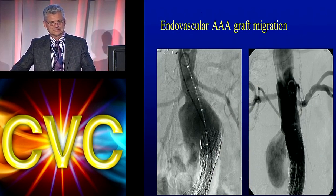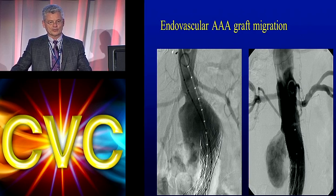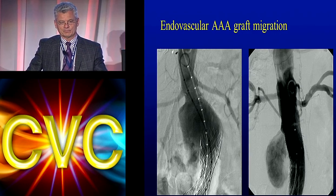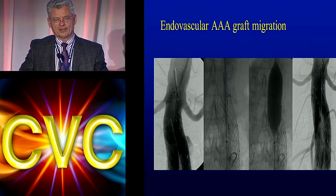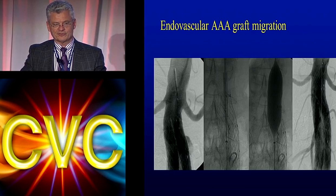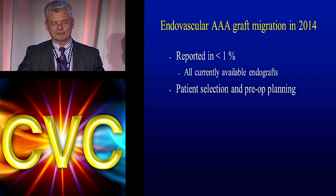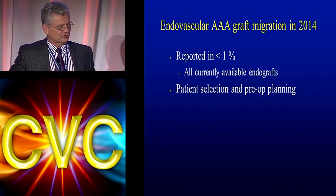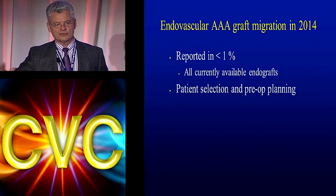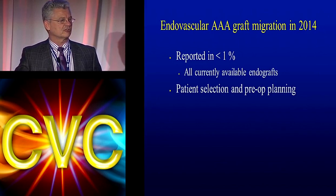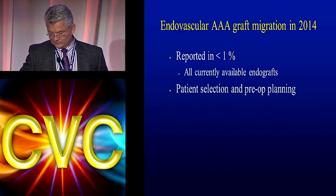We used to see migration issues a few years ago, particularly with the Ancure device, but we just haven't seen that much anymore with current technology, the anchoring, suprarenal stent attachments, and so forth. We used to be able to get a secondary intervention with good outcomes, but in 2014 migration of stent grafts is reported at less than 1% with all devices. Patient selection and preoperative planning are key to avoiding these complications.